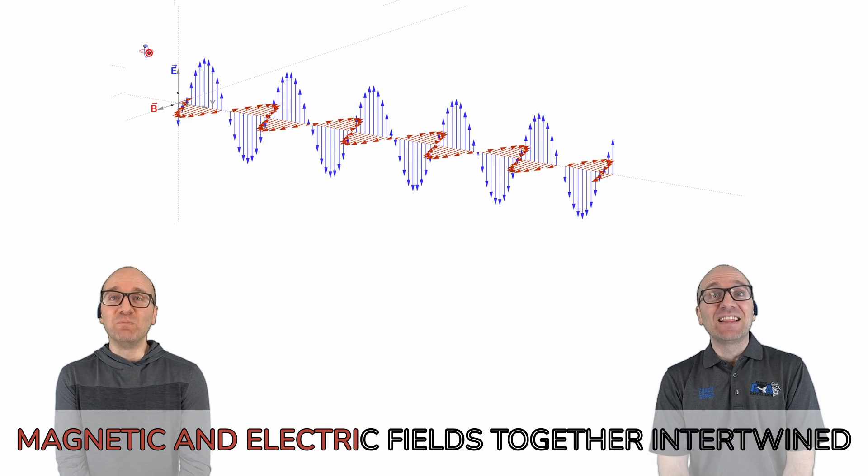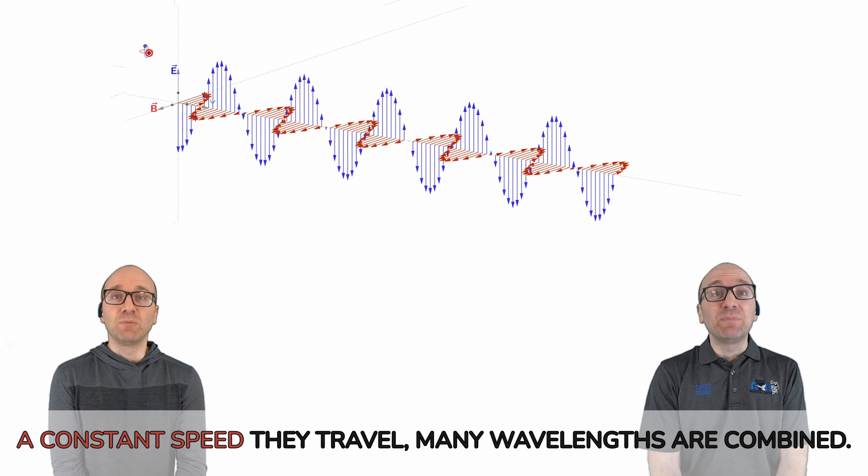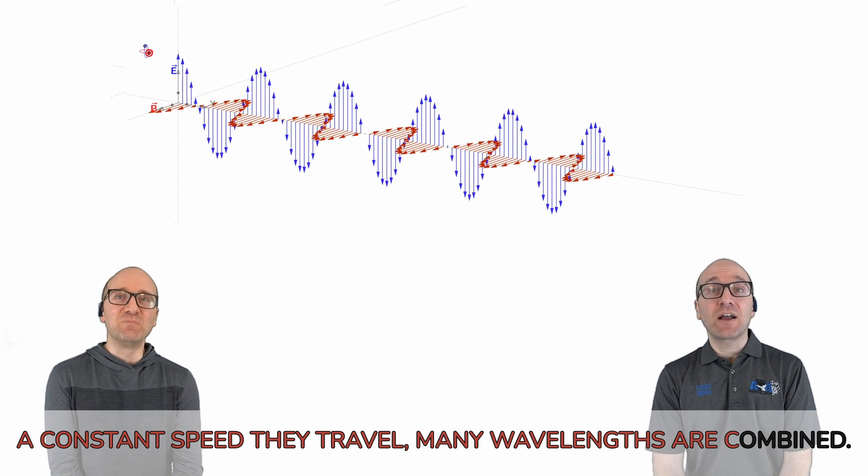Magnetic and electric fields together intertwined. A constant speed they travel, many wavelengths are combined.